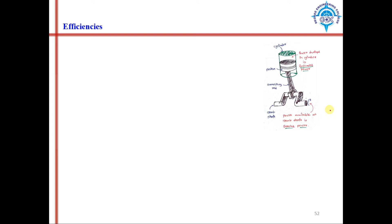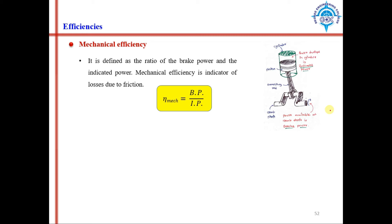Now let's talk about efficiencies. Mechanical efficiency is the ratio of brake power to indicated power. It represents the efficiency of the slider-crank mechanism. Input to the mechanism is indicated power acting on the piston top, and the output is brake power at the crankshaft. So mechanical efficiency equals brake power divided by indicated power.